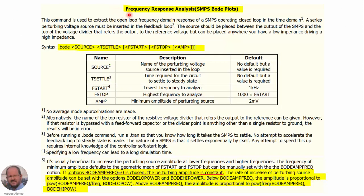Now let's see how to do this using QSPICE. Going to the help of the program, we can find information related to the frequency response analysis. We have to use the .bode statement with the following parameters: first, the source — the name of the perturbing voltage source we insert in the loop; T-settle is the time required for the circuit to settle to steady state; F-start is the lowest frequency; F-stop is the highest frequency; and Amp is the minimum amplitude of the perturbing source. It is noted that it is usually good to increase the perturbing source amplitude at lower and higher frequencies to get a better representation of the response.